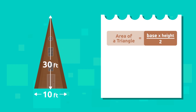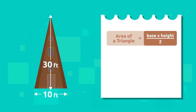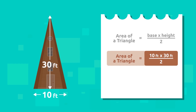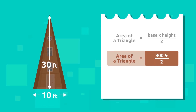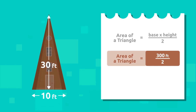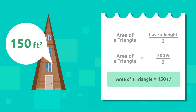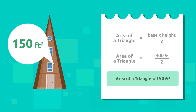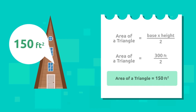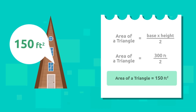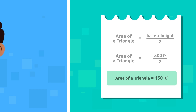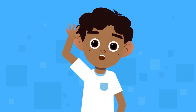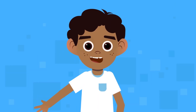Remember that we must multiply the base by the height and divide by two. 10 times 30 equals 300, and 300 divided by 2 equals 150. The area of Anna's triangular house wall is 150 square feet — she'll have to buy a lot of paint!